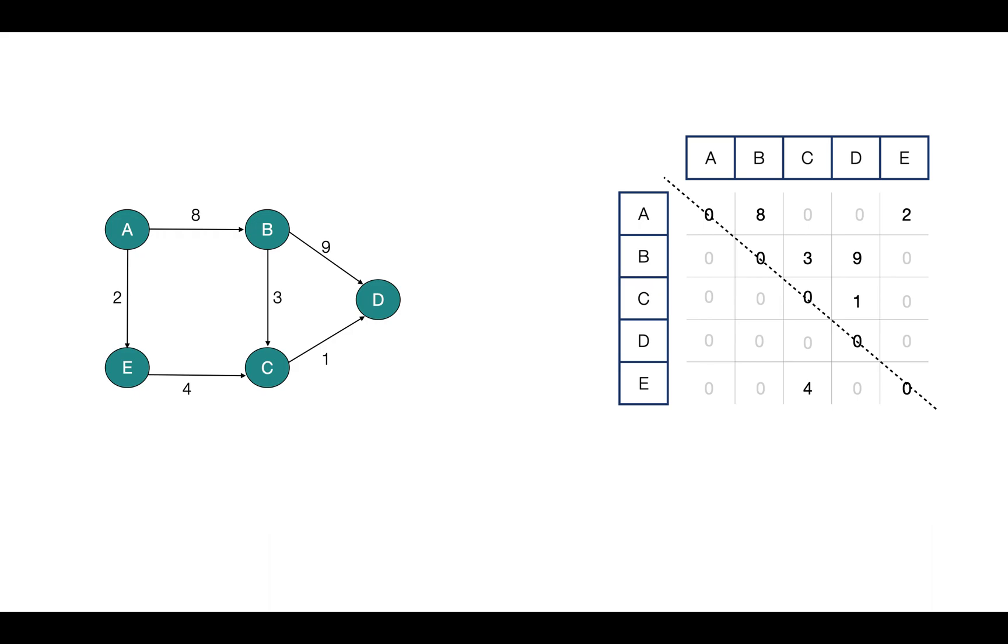Here in this example, we have labeled the nodes with alphabets. But in code these vertices are going to be represented by array indices. Because it's a convenient way. But still if we want to label them with alphabets or some other text, then we would have to create symbol tables for them where we can map them with indices.